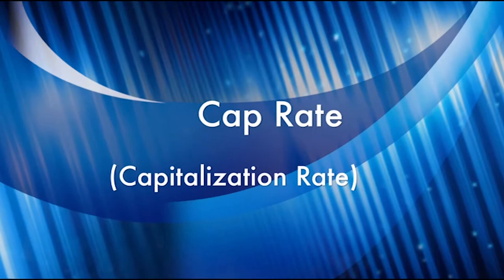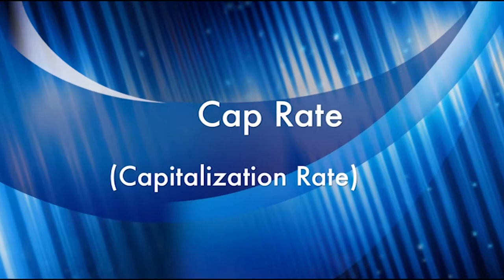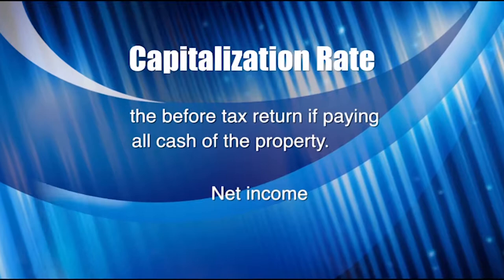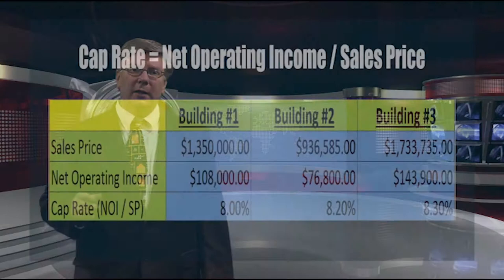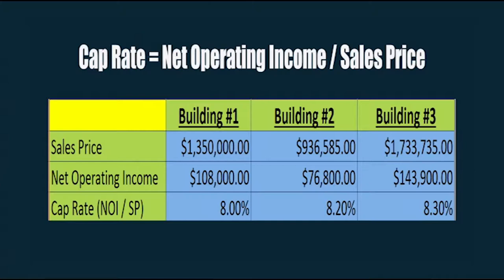The cap rate, or capitalization rate, is a simple formula used to obtain a rate of return on the buyer's money if the buyer were paying all cash for the property. It's the net income of the property divided by the sales price. To determine what price to pay for a building, look at competing buildings that have sold recently: what was their NOI and what was the sales price? Divide NOI by sales price and you've got a cap rate. For our 10-unit apartment building example, three comparable sold buildings have cap rates of 8%, 8.2%, and 8.3% respectively.